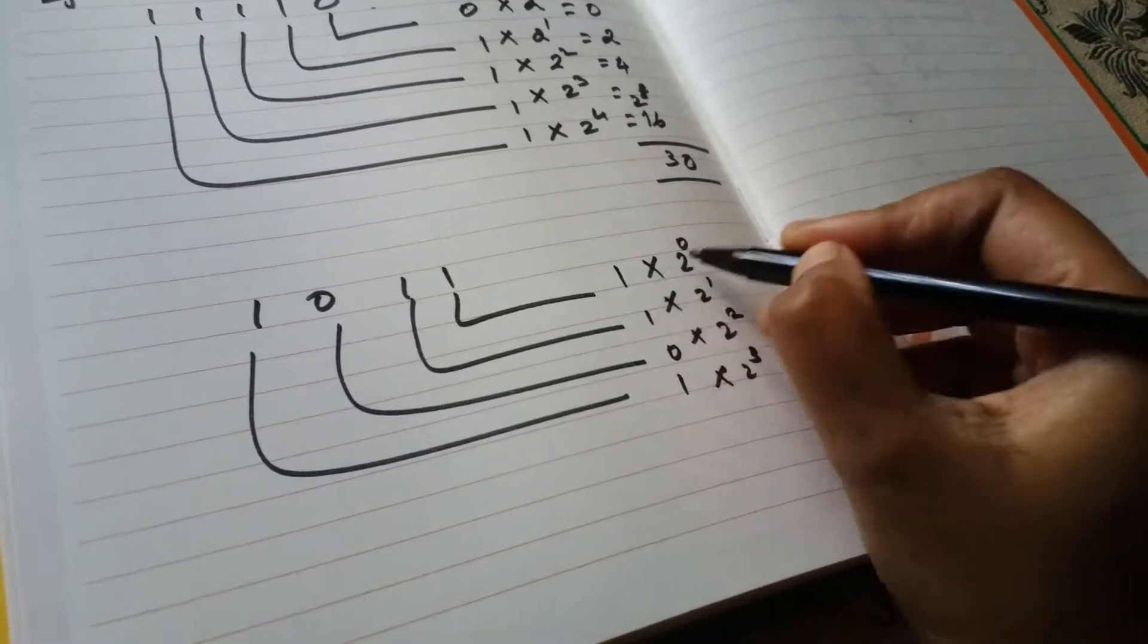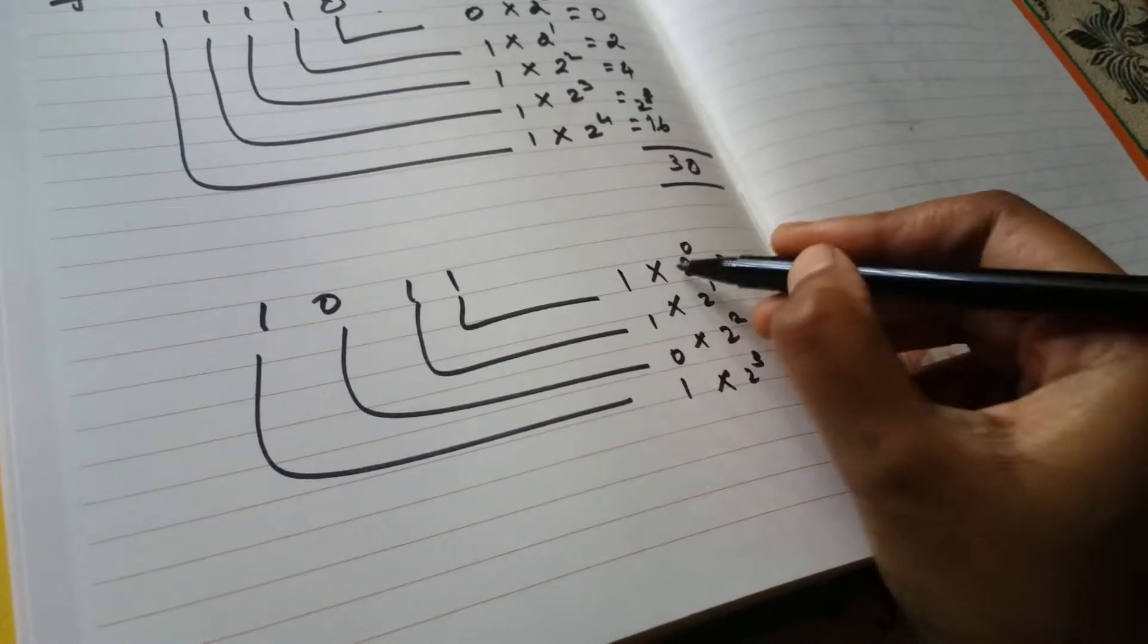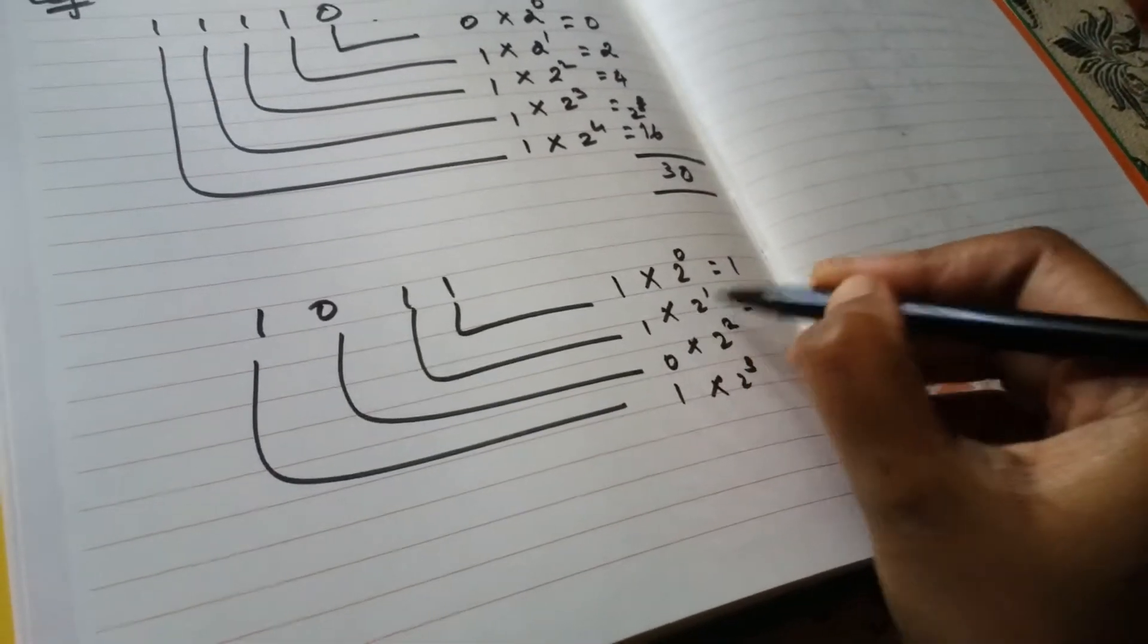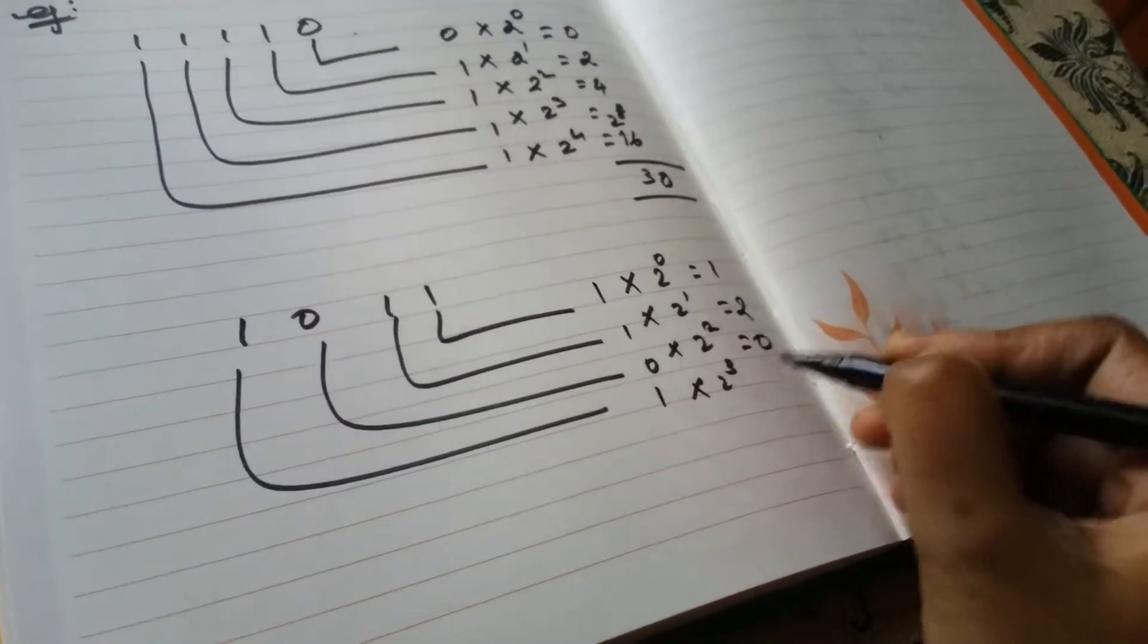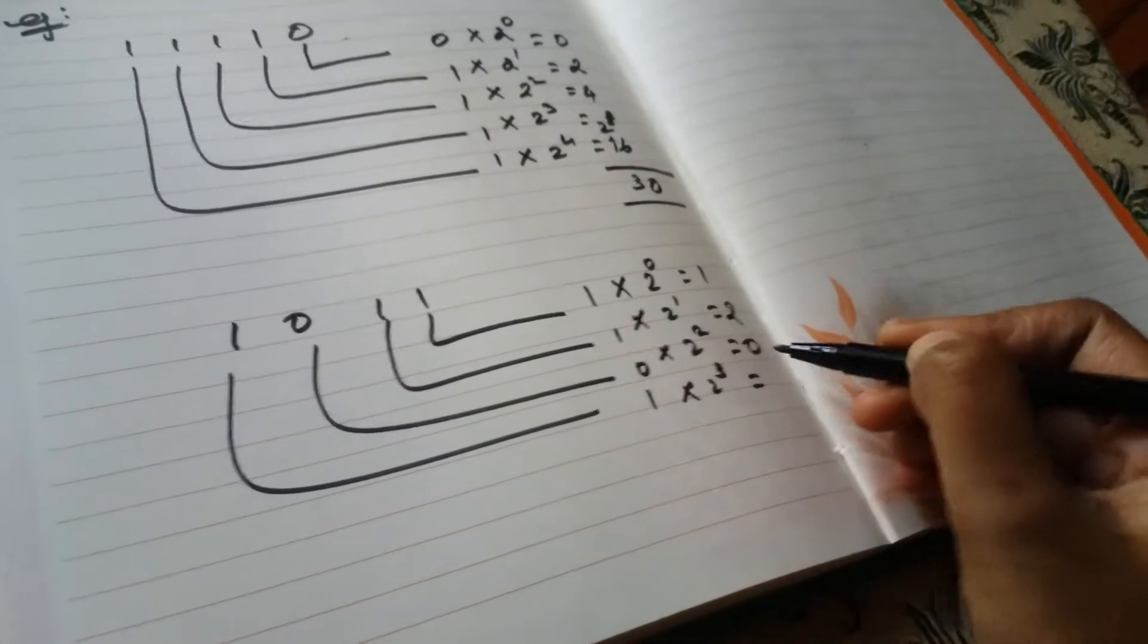So you'll get two power zero is one, so one into one is one. Here one into two is two. Anything into zero is zero. And two power three is eight.